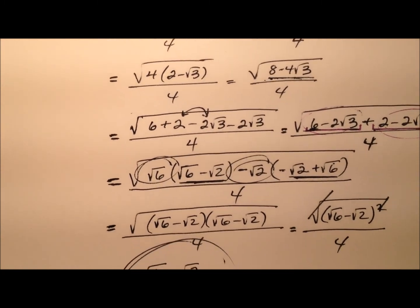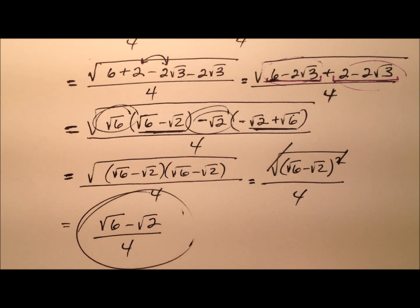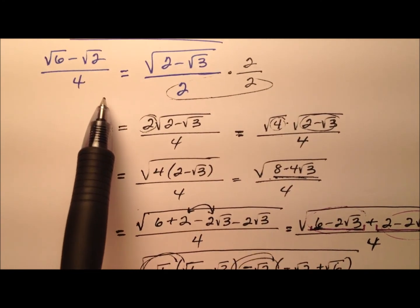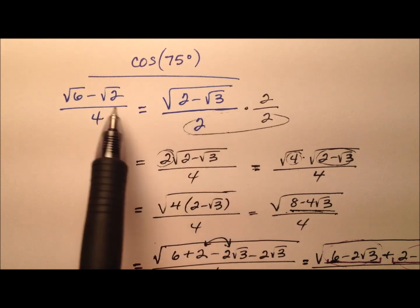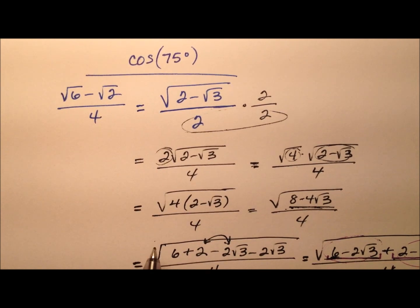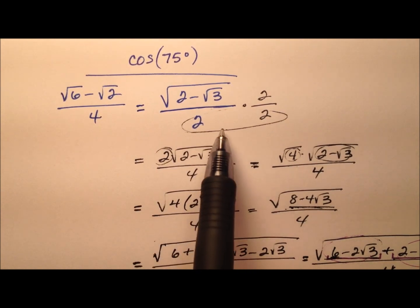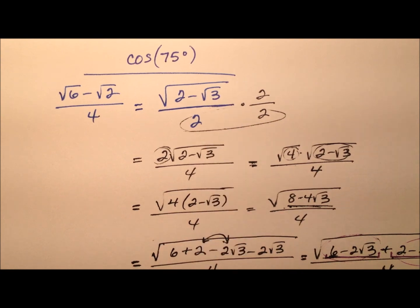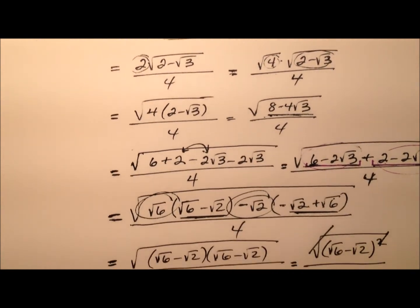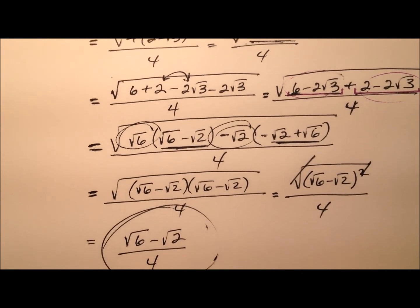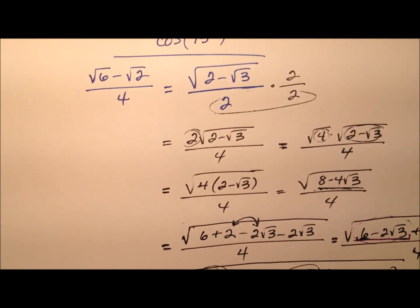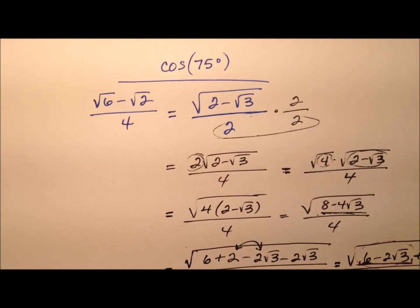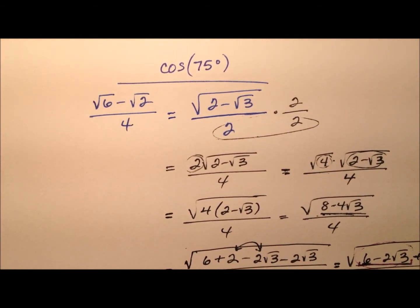We have gone through this process of starting with seemingly not equal expressions, but they were equal. We did some numeric manipulation step by step and showed that one was indeed equal to the other. So both of these will be exact values for the cosine of 75 degrees.